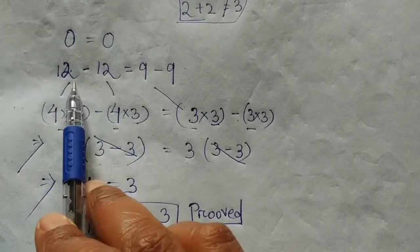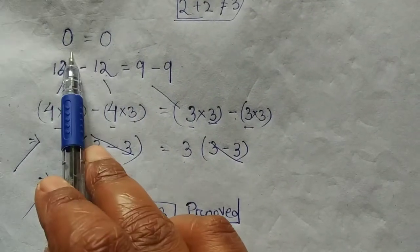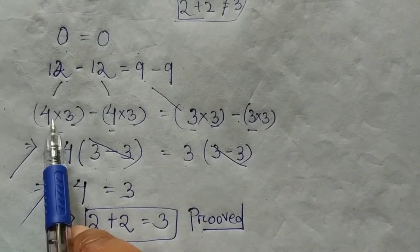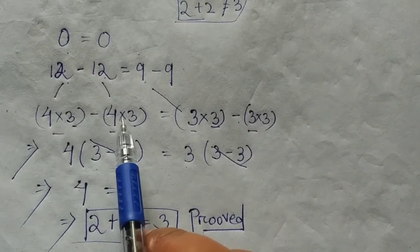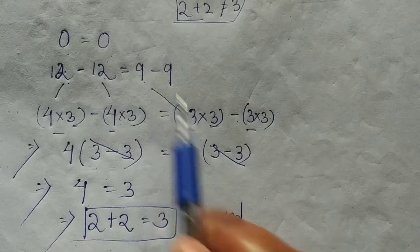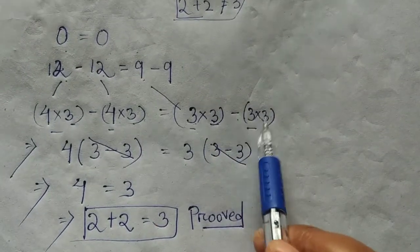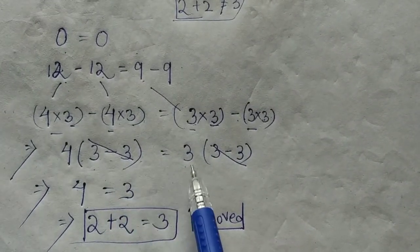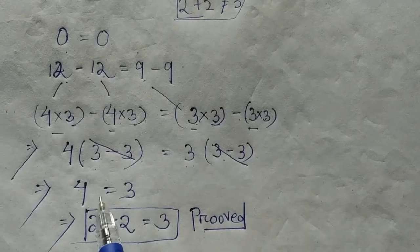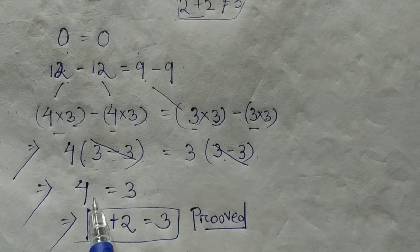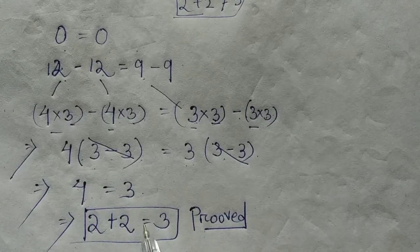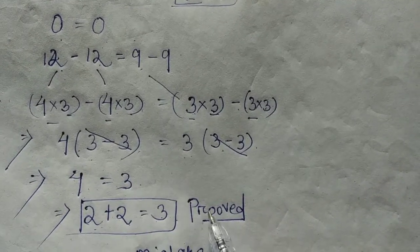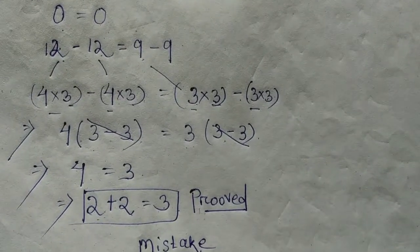Prove 0 is equal to 0. 0 is such that 12 minus 12, and 0 is such that 9 minus 9. 12 is equal to 4 into 3, and 9 is equal to 3 into 3. That implies 4 common 3 minus 3, 3 common 3 minus 3 — cancel 3 minus 3. Therefore 4 is equal to 3, and 2 plus 2 is equal to 4, so 2 plus 2 is equal to 3.